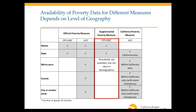The supplemental poverty measure uses the same CPS data as the official measure, so it can be used to look at poverty at the national and state level, but not at particular metro areas, counties, or cities — the dataset is simply not large enough. However, supplemental poverty thresholds are published for all metro areas each year.